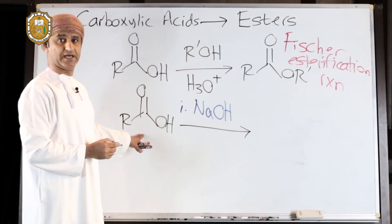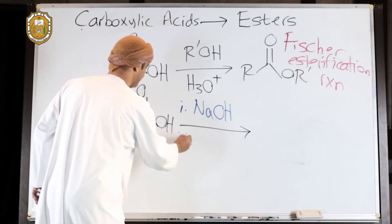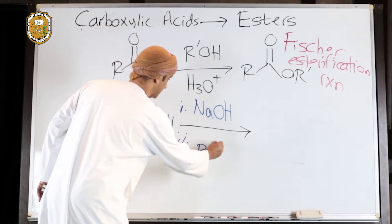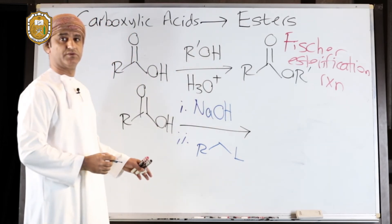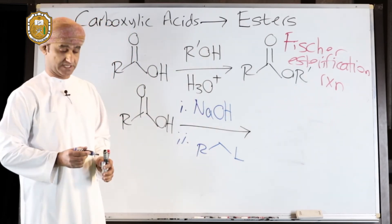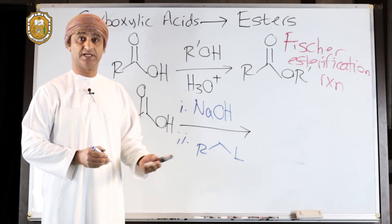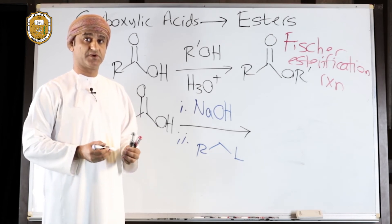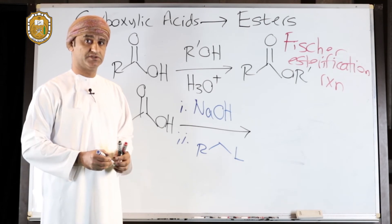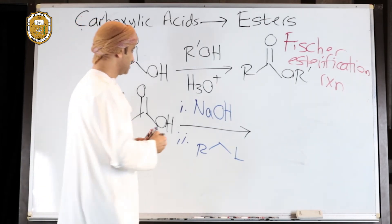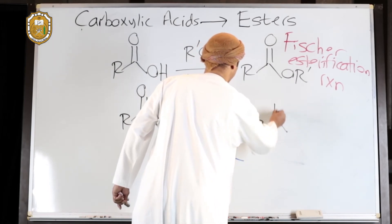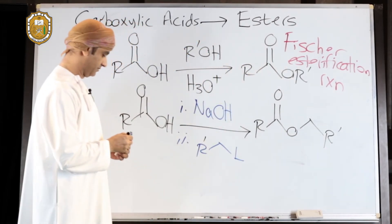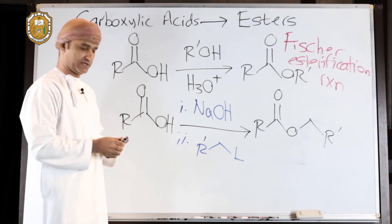A base such as the hydroxide ion or bicarbonate is sufficient — sodium hydroxide is good enough to convert carboxylic acids into the corresponding carboxylates. The carboxylate ion, being nucleophilic, can then react with an alkyl halide or any substrate with a good leaving group. It doesn't have to be a halide; it could be a sulfonate such as a tosylate, triflate, or mesylate — any good leaving group can work as a substrate in a substitution reaction.